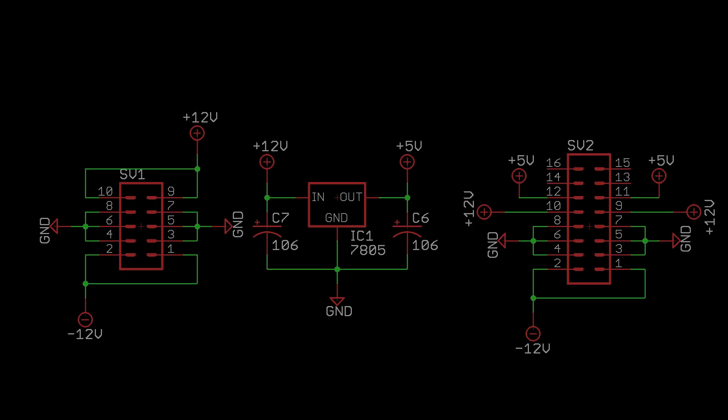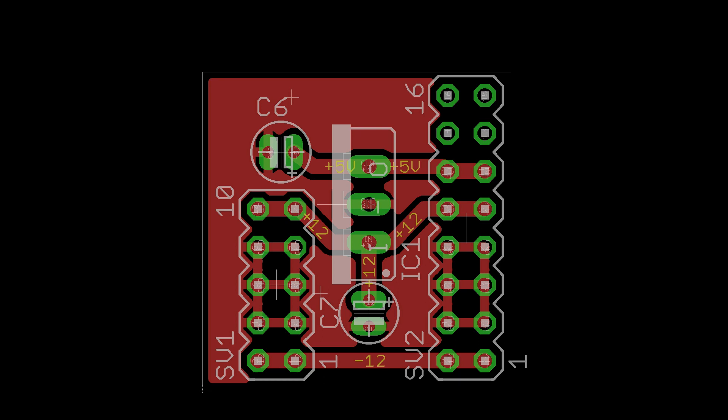And Eurorack input and output connectors that pass all the appropriate voltages to the appropriate pins. For those of you playing at home, a layout as a single sided circuit board would look something like this. The positive and negative 12 volts along with ground coming out of this 10 pin Eurorack power connector here. And 5 volts being made and all the voltages leaving through this 16 pin power connector here.